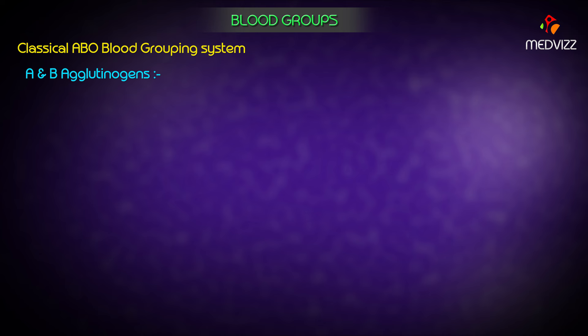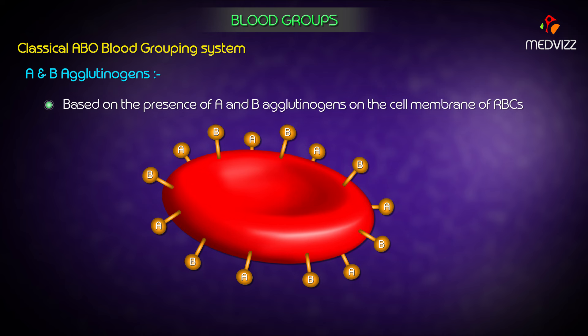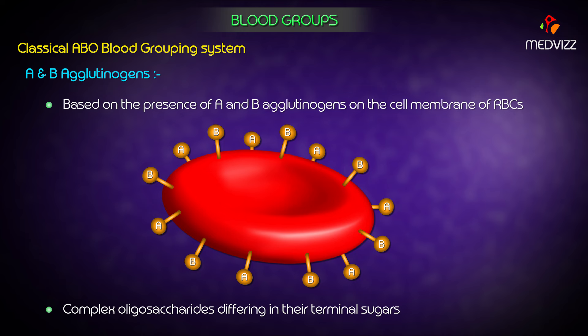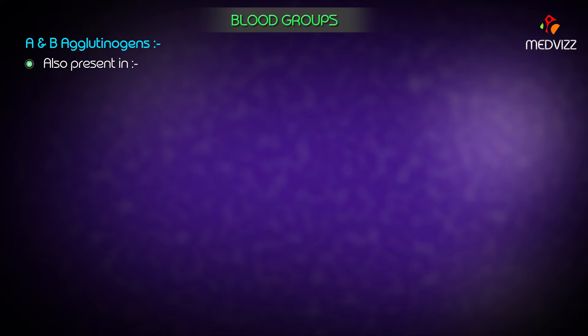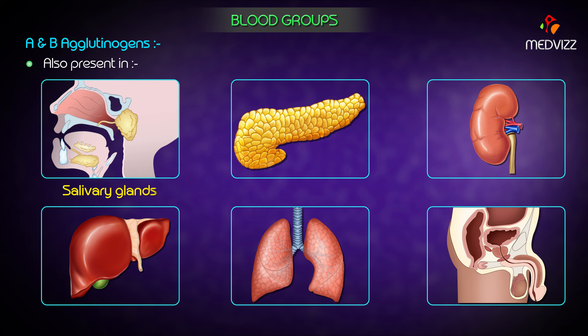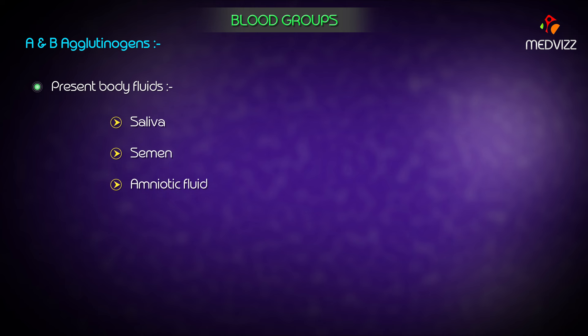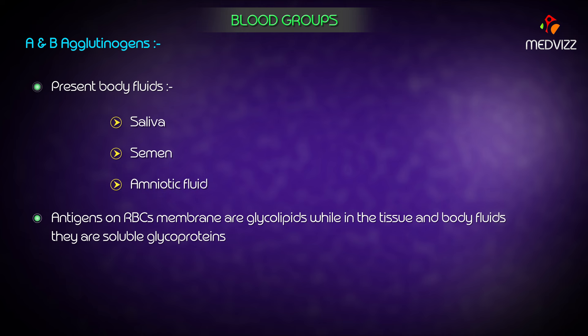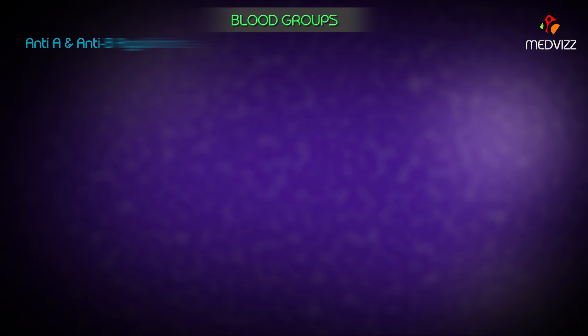The classical ABO blood grouping system is based on the presence of A and B agglutinogens on the cell membranes of RBCs. A and B agglutinogens are complex oligosaccharides differing in their terminal sugars. These antigens are also present in many other tissues like salivary glands, pancreas, kidney, liver, lungs, and testis, and in body fluids like saliva, semen, and amniotic fluid. On RBC membranes they are glycolipids, while in tissues and body fluids they are soluble glycoproteins.